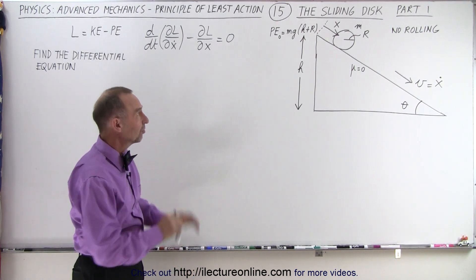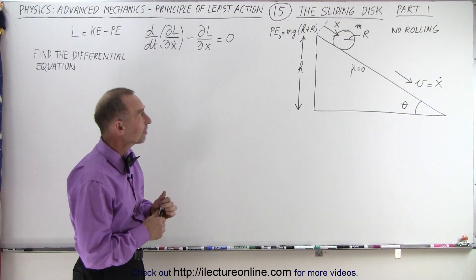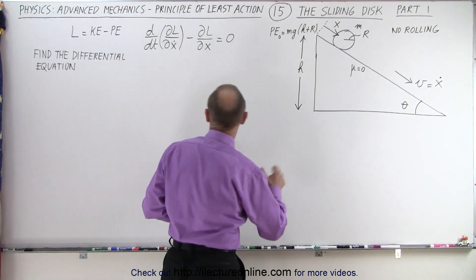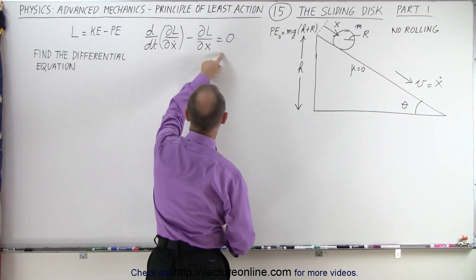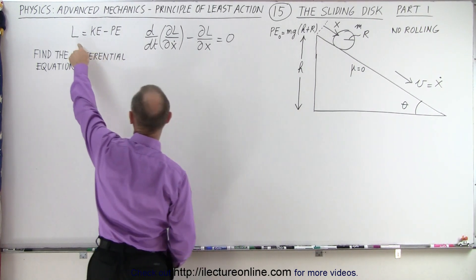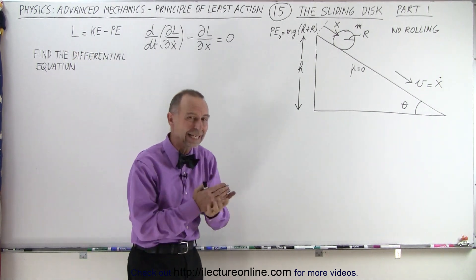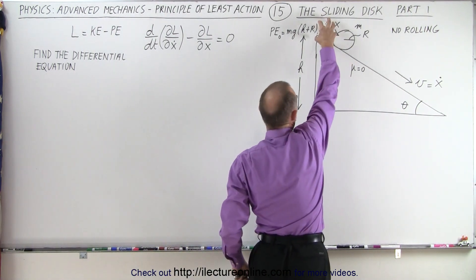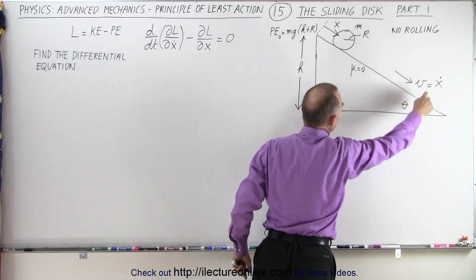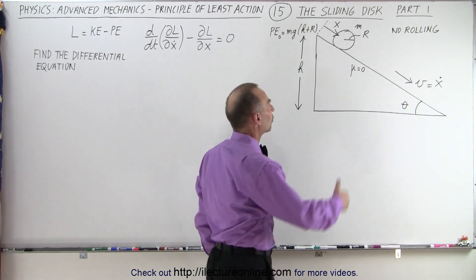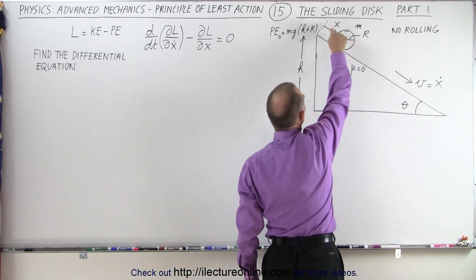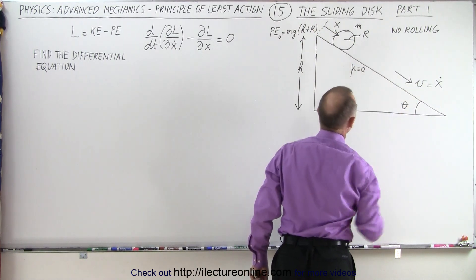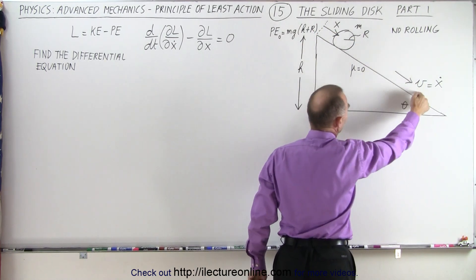We're going to do it on some simple examples. The next example is the sliding disk, and we're going to do it in two parts. The first part, we're going to find the differential equation derived from the Lagrangian equation. The incline has an angle theta, and as the disk goes down the incline, we assume the positive x distance is down the slope. So the velocity on the incline is equal to x-dot.